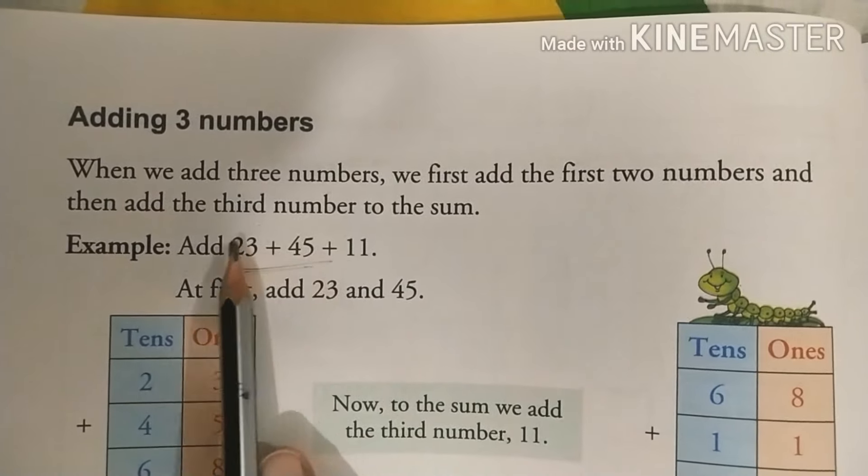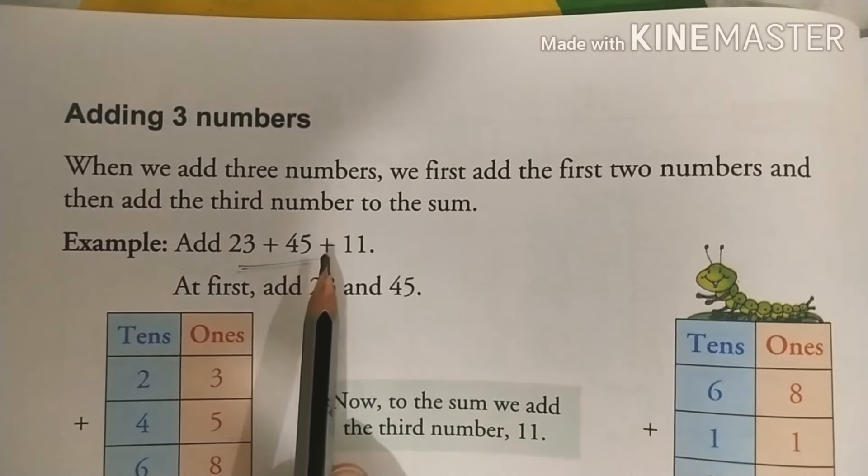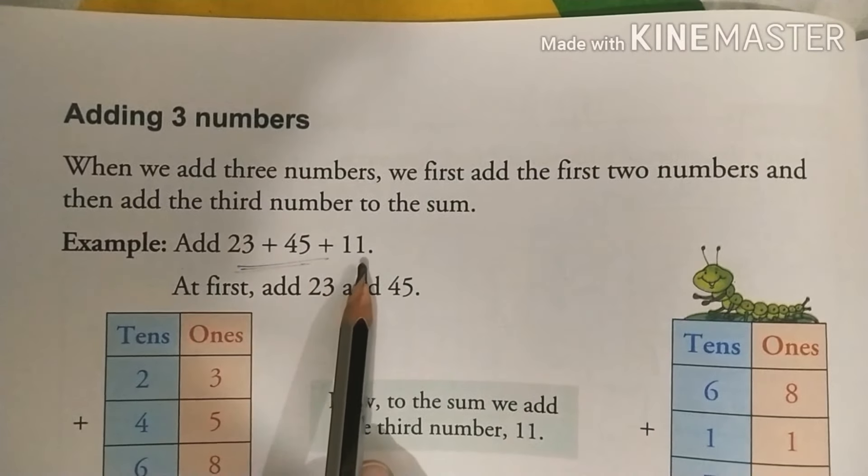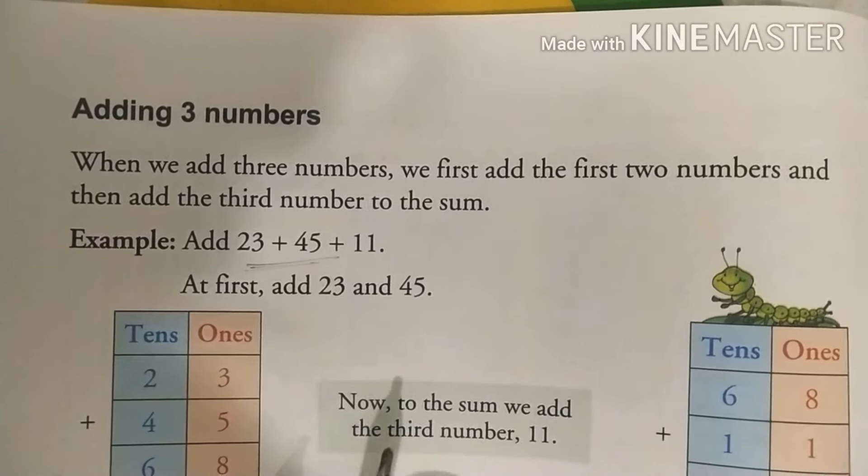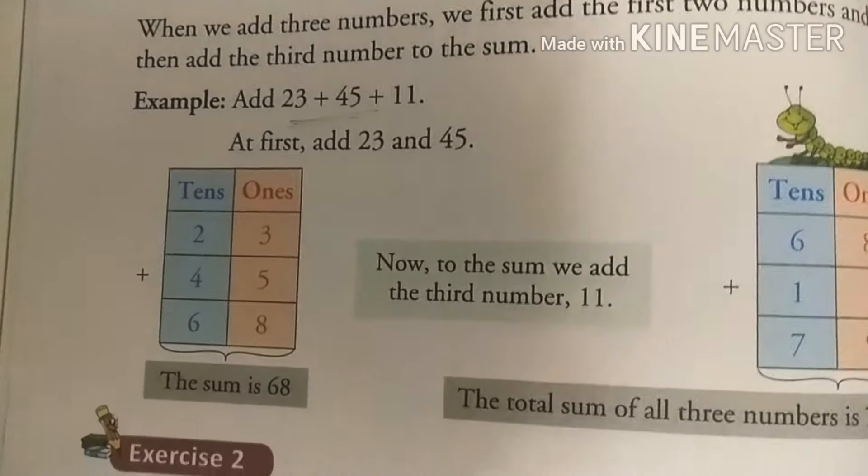Then, joh isko add karte hain ke baad hume sum milta hain, wo hum 3rd number se add karte hain. Then hume kya hota hain, final sum mil jata hain. Here is an example.